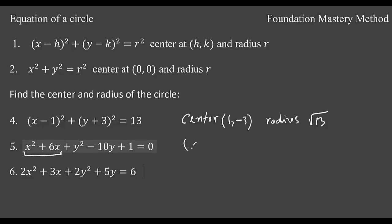That one you will do like (x + half of 6 which is 3)² plus take your y and keep the negative sign. And then half of 10 will be 5 squared.